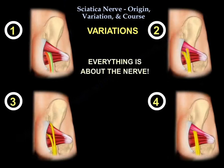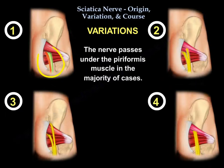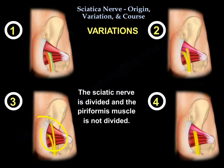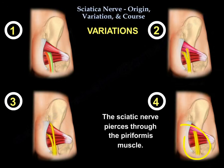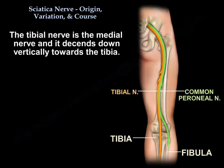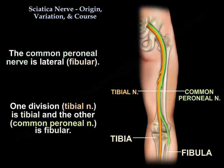To summarize the variations: in the majority of cases, the nerve passes underneath the piriformis. In the second pattern, the piriformis is divided and the nerve is divided. In the third pattern, the nerve is divided but the piriformis is not. In the fourth pattern, the nerve pierces through the piriformis muscle. The tibial nerve is medial and descends vertically toward the tibia, while the common peroneal nerve is lateral — also called fibular — and goes laterally toward the fibula.